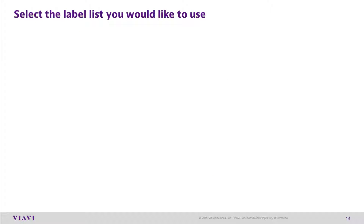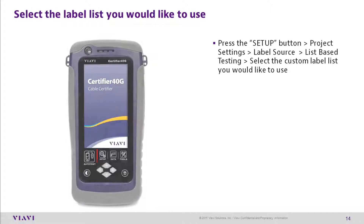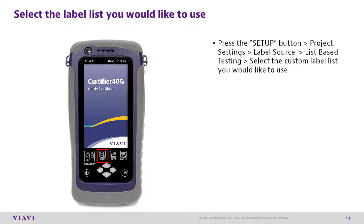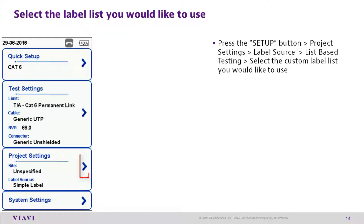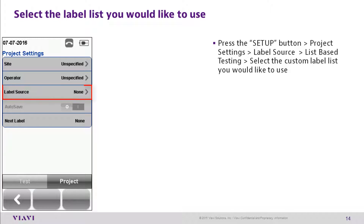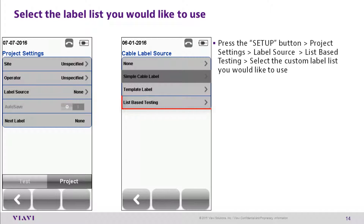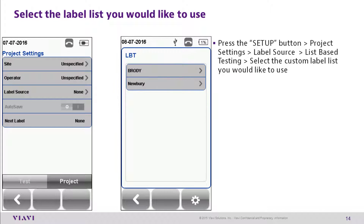To select a label list for testing, press the Setup button, then press Project Settings. Go to Label Source and select List Based Testing. Then select the custom label list you want to use.